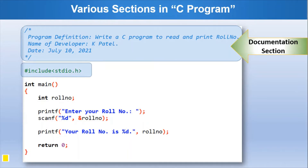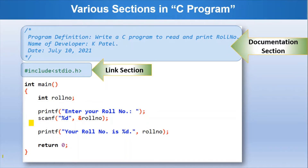Hash include stdio.h is a part of the link section. System libraries and header files like stdio.h are linked with the C program using this link section. printf and scanf are functions defined under this header file, so we are able to use the printf function in this program because of this hash include statement.